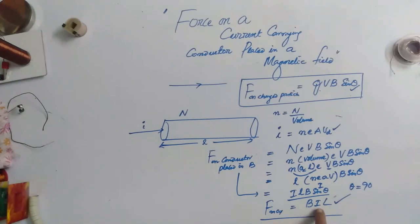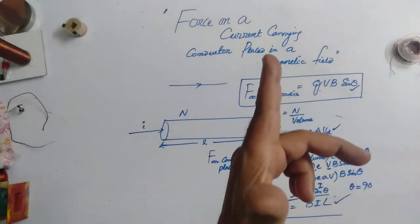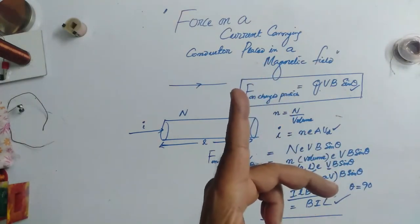If more is the length of the conductor, obviously it will have large number of charges. So then automatically Q by T current, that is also reason for it. If you are increasing the magnetic field, then the force experienced by it will also be increased. Now the question comes, when we talk about force, you should be discussing both the magnitude and direction. So how does it move?